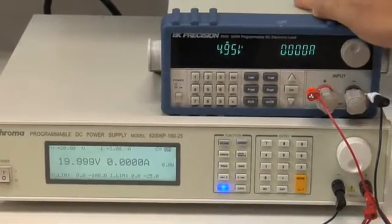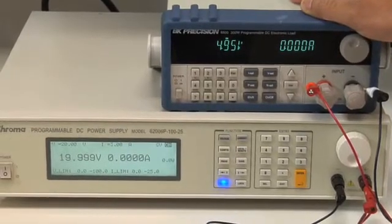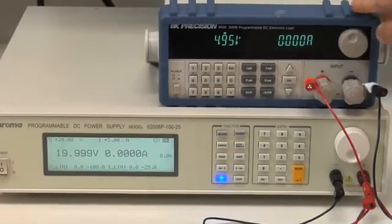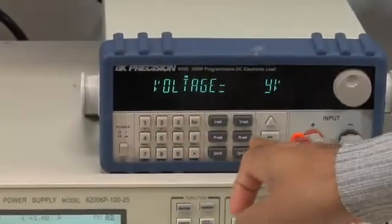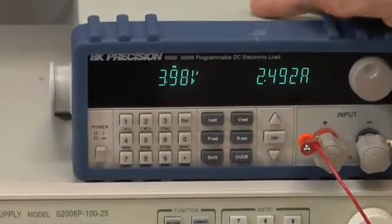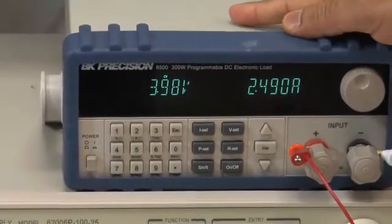I'm going to change the electronic load so it forces the converter output into current limit. So I'm going to change the output voltage of this electronic load to 4 volts. And as you can see, the converter is operating now in current limit, which is close to 2.5 amps.